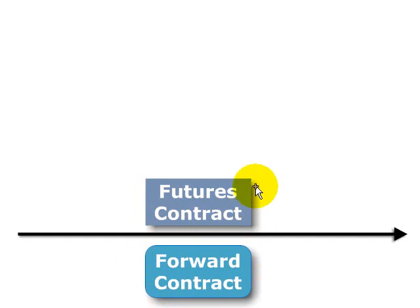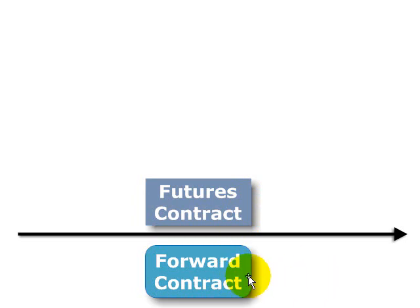Recall the difference between a forward contract and a futures contract is that the forward contract is an over-the-counter agreement between two counterparties — it's a private transaction. The futures contract, on the other hand, trades on an exchange according to standardized features and terms. The primary risk for each is different. For the forward contract, because it's an agreement between two counterparties, the primary risk is counterparty risk — the risk that the other counterparty will default. The futures contract trades on an exchange where technically the exchange is the counterparty and there is typically very little risk of default, so there isn't so much counterparty risk as basis risk. The primary risk for the futures contract is basis risk.